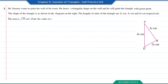Question number 3. Mr. Semmy wants to paint the wall of his room. He draws a triangular shape on the wall. The sides of the triangle are 2x cm, 3x cm, and 4x cm respectively, and the area is √135 cm². Find the value of x. We will solve using Heron's formula. The semi-perimeter equals (4x plus 3x plus 2x) divided by 2, which equals 9x/2, or 4.5x.